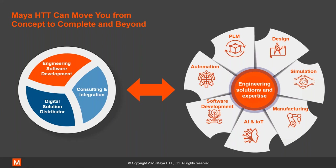All three of these groups work really closely together. It allows us to be very agile and help our customers with any of their digital solutions. And you can see over on the right side, the areas that we do cover from PLM to design, simulation, manufacturing, AI and IoT, software development and automation.